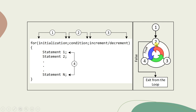This forms a loop: 2 → 4 → 3 → 2, and so on. When the condition at point 2 becomes false, we exit the loop. This is how execution works with a for loop. Now let's take an example and explain with a simple program.